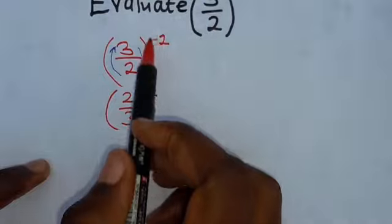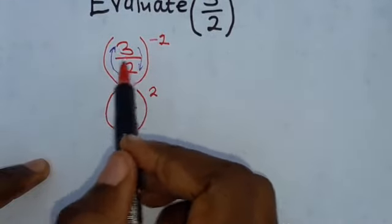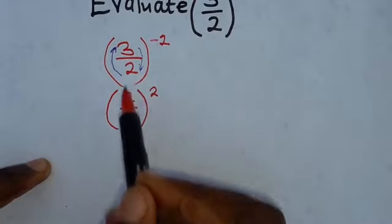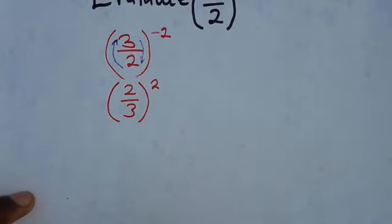So every time when you are given a negative power, just swap the numerator with the denominator. Then the power will become positive.